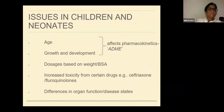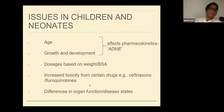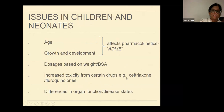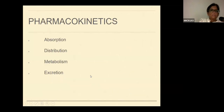So what are the main issues in children and small babies? We know that age, growth, and development affect the pharmacokinetic processes — that is absorption, distribution, metabolism, and elimination. Dosages are frequently based on weight and/or body surface area. There are certain drugs which cause increased toxicity, like ceftriaxone and fluoroquinolones in small children. And there are differences in organ function and disease states. We'll briefly see how it is affected.